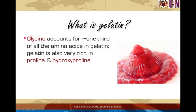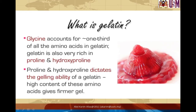Glycine accounts for around one third of all the amino acids in gelatin. Gelatin is unique because it contains an unusually high level of the cyclic amino acids proline and hydroxyproline. The presence of these amino acids is critical because they dictate the gelling ability of gelatin — a higher amount gives a firmer gel. This is why mammalian gelatin from porcine and bovine sources has higher gel strength, as they contain more proline and hydroxyproline compared to fish gelatin, which contains lower amounts.